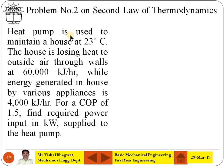A heat pump is used to maintain a house at 23 degrees Celsius. The house is losing heat to outside air through walls at 60,000 kJ per hour, while energy generated in the house by various appliances is 4,000 kJ per hour. For a COP of 1.5, find the required power input in kW supplied to the heat pump.